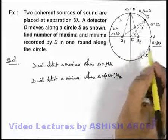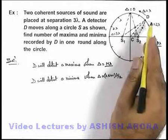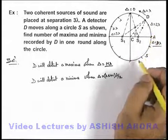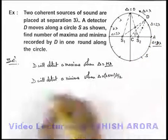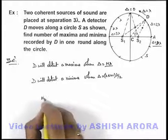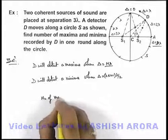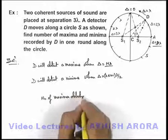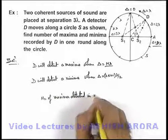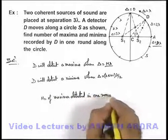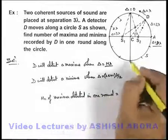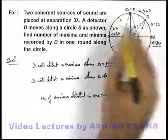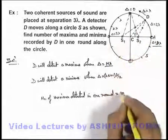So these are the locations where path difference is a multiple of lambda, corresponding to detection of maximum sound. We can easily calculate: the number of maxima detected in 1 round is equal to — here these are 4 positions, and 8 positions in the 4 quadrants — giving a total of 12.